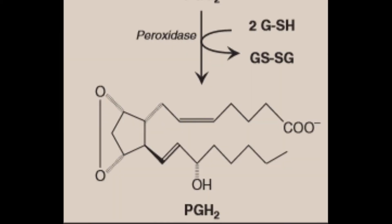The first step in prostaglandin synthesis is the oxidative cyclization of free arachidonic acid to yield PGH2 by prostaglandin endoperoxide synthase (PGH synthase).